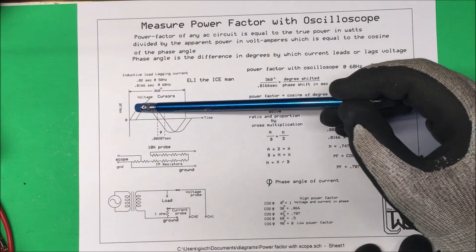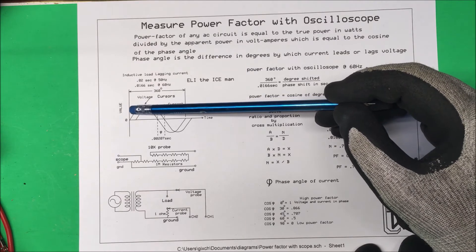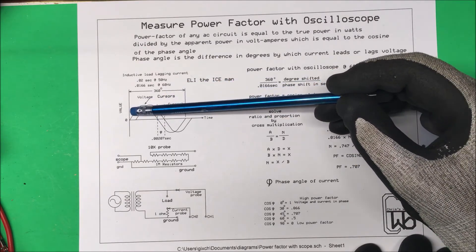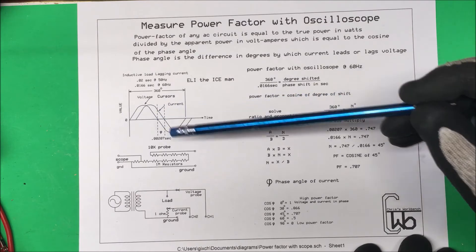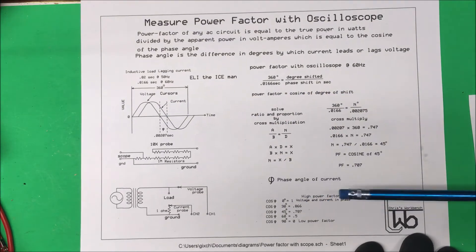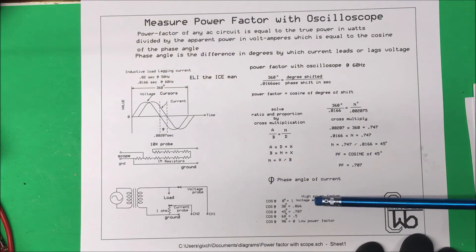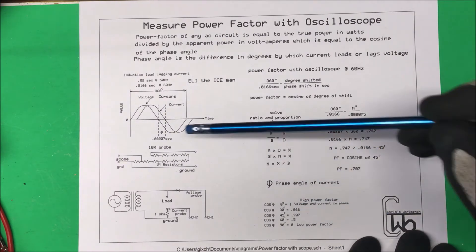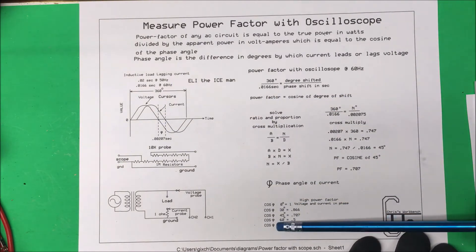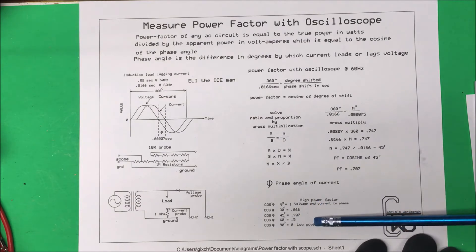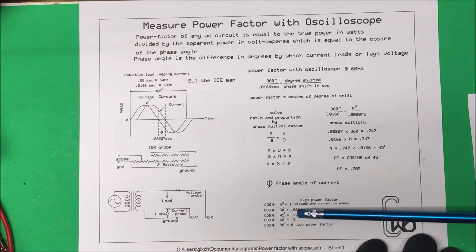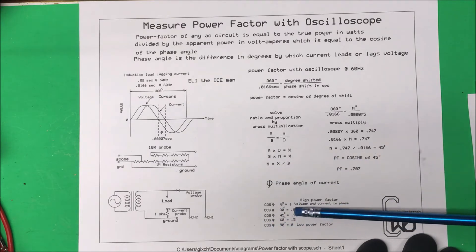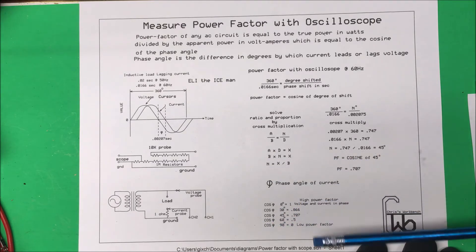If the two sine waves were together — looking like one sine wave — there would be zero degrees between them, and the cosine of zero is one. So one is the highest power factor you can have, which is the best. If they were 90 degrees apart, cosine of 90 is zero, which is the worst power factor. We were at 45 degrees, giving 0.707.